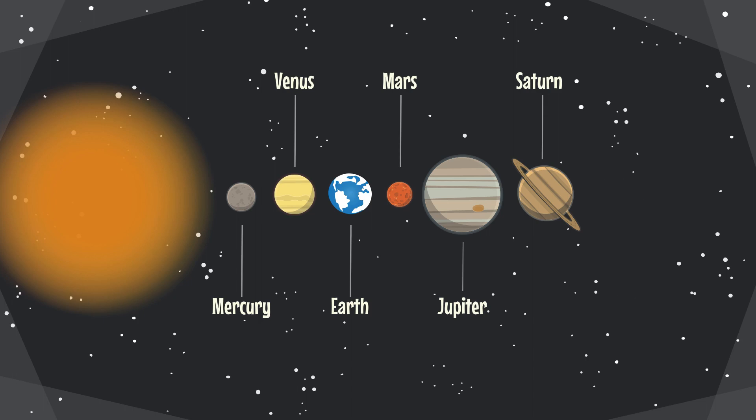The seventh is Uranus. It has a smaller ring system and it is the only planet that is tilted on its side. Uranus has no solid surface and is made up mostly of gases and water.